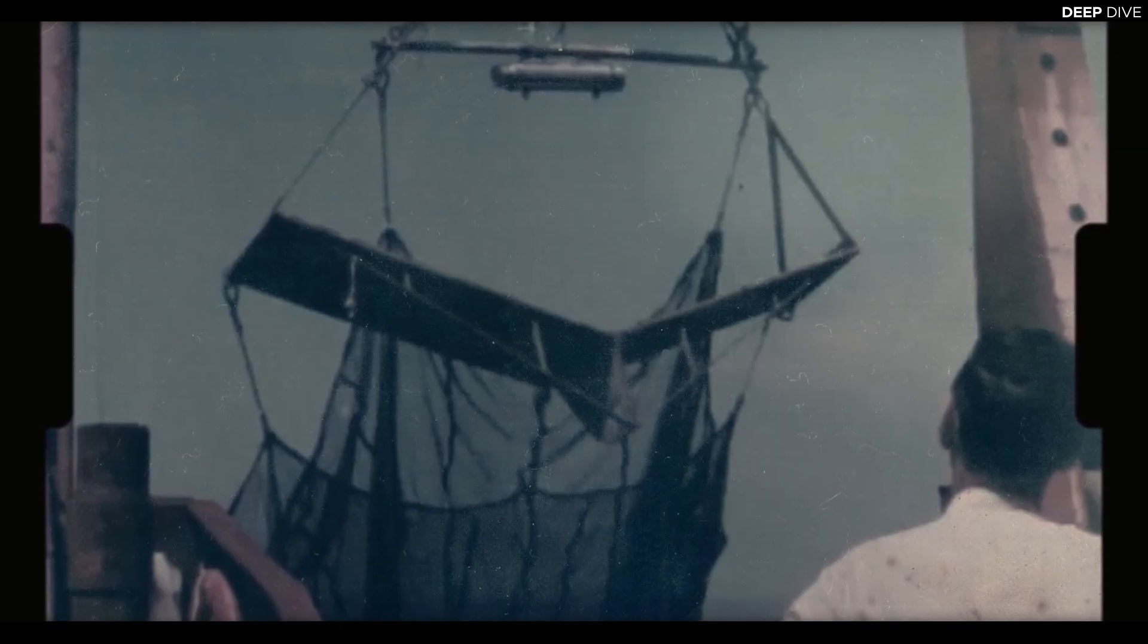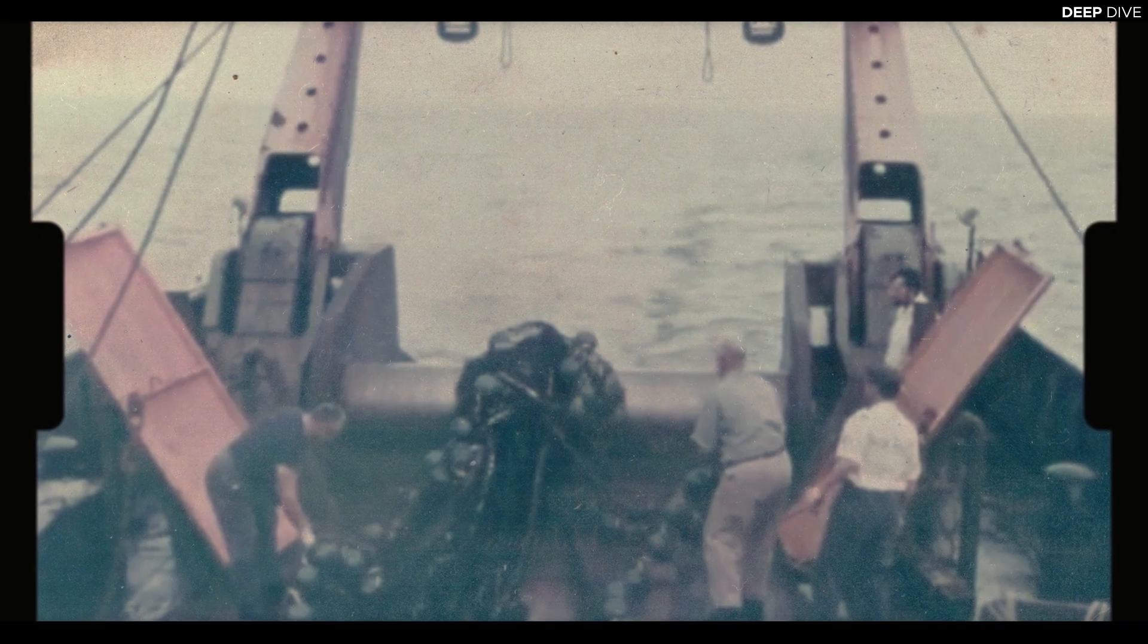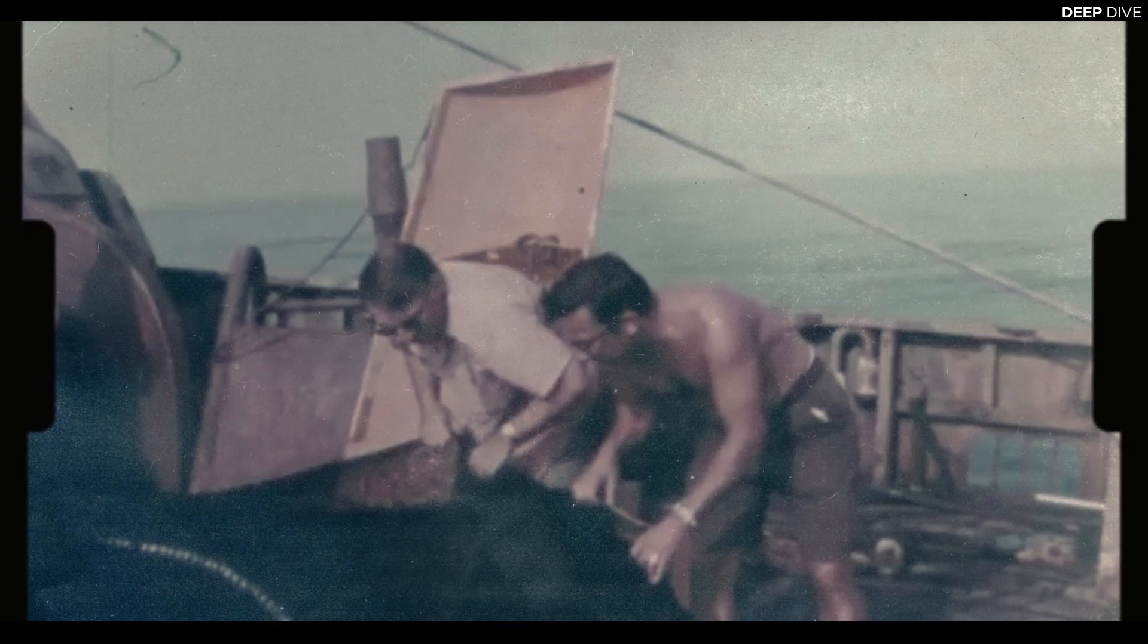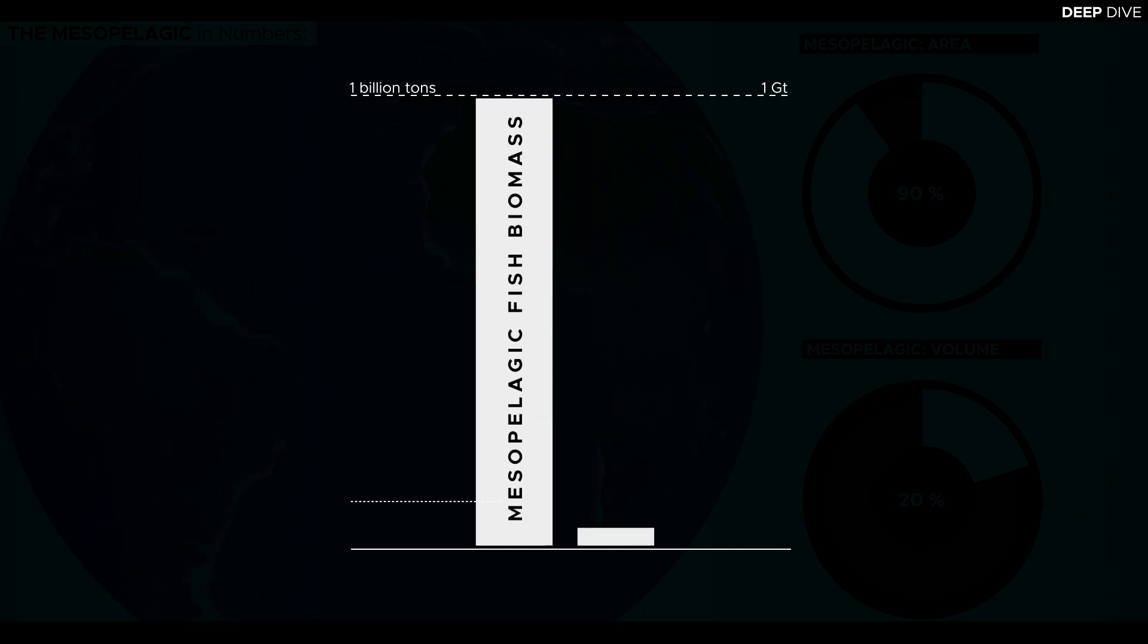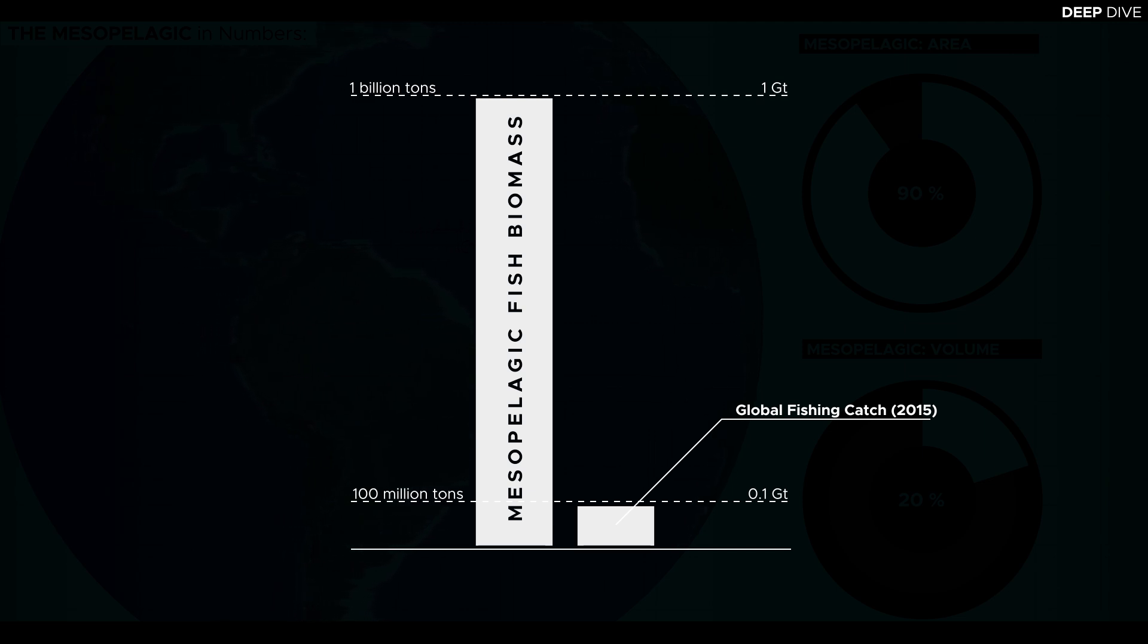Extensive trawls conducted in the 1970s suggested that the fish biomass found in this zone might be as high as 1 billion tons or 1 gigaton. For comparison, the amount of fish caught each year by commercial fisheries worldwide is with a little under 100 million tons, only roughly one-tenth of that.